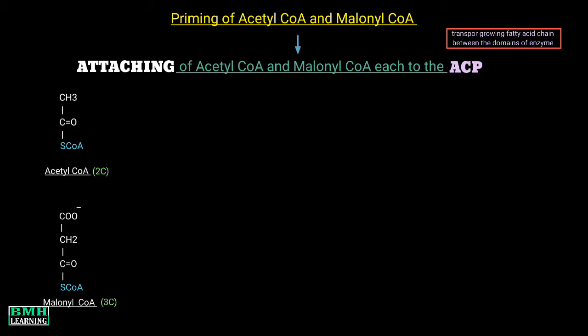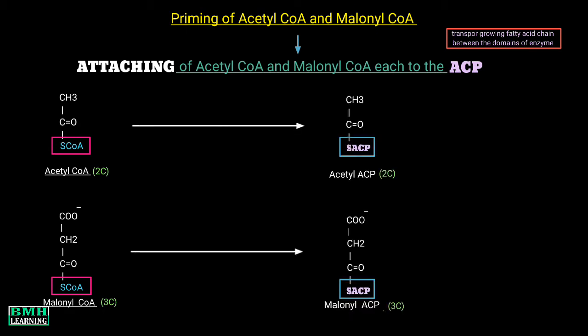So the question is, how does it do so? If you see clearly in the given molecules, the coenzyme A is in thioester linkage with both acetyl-CoA and malonyl-CoA. All we have to do is replace the thioester linkage formed by CoA with thioester linkage of acyl carrier protein. So we are providing both molecules with acyl carrier protein and it frees up the CoA.